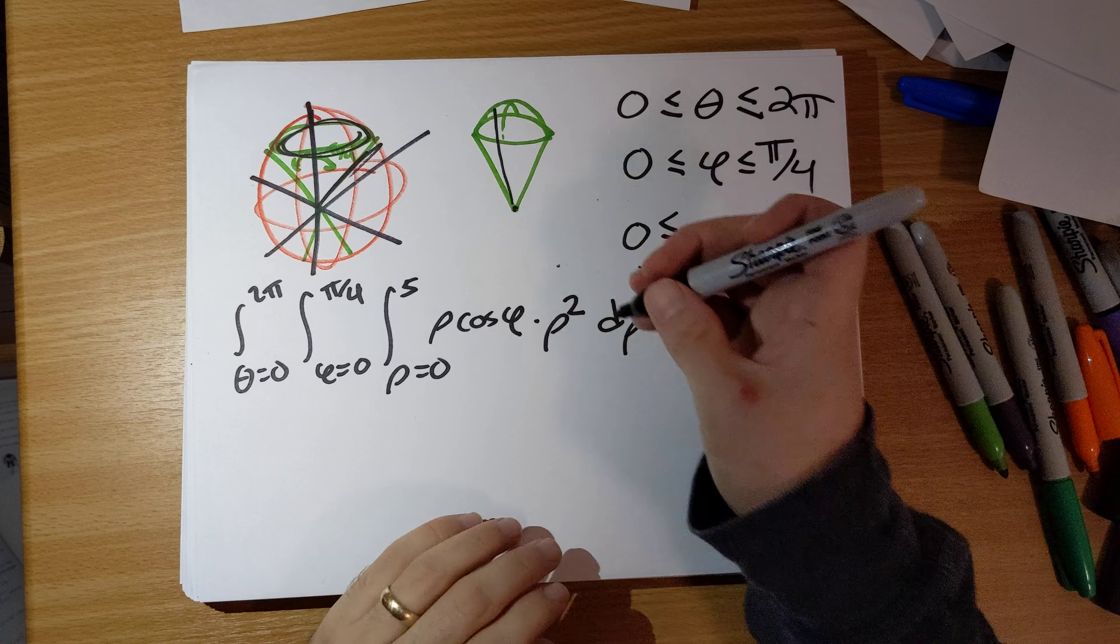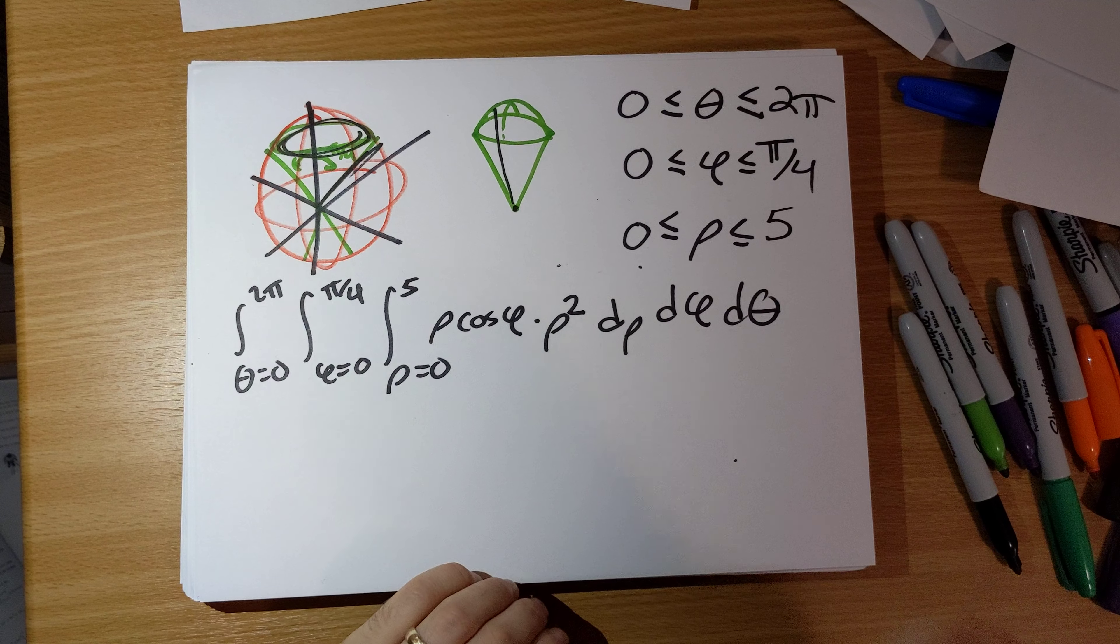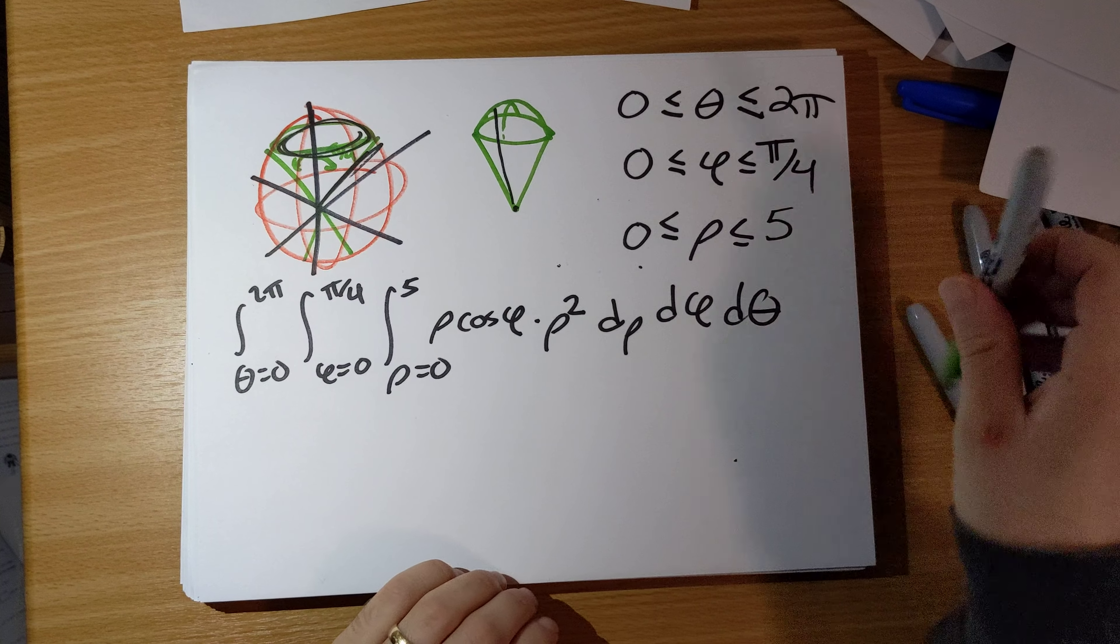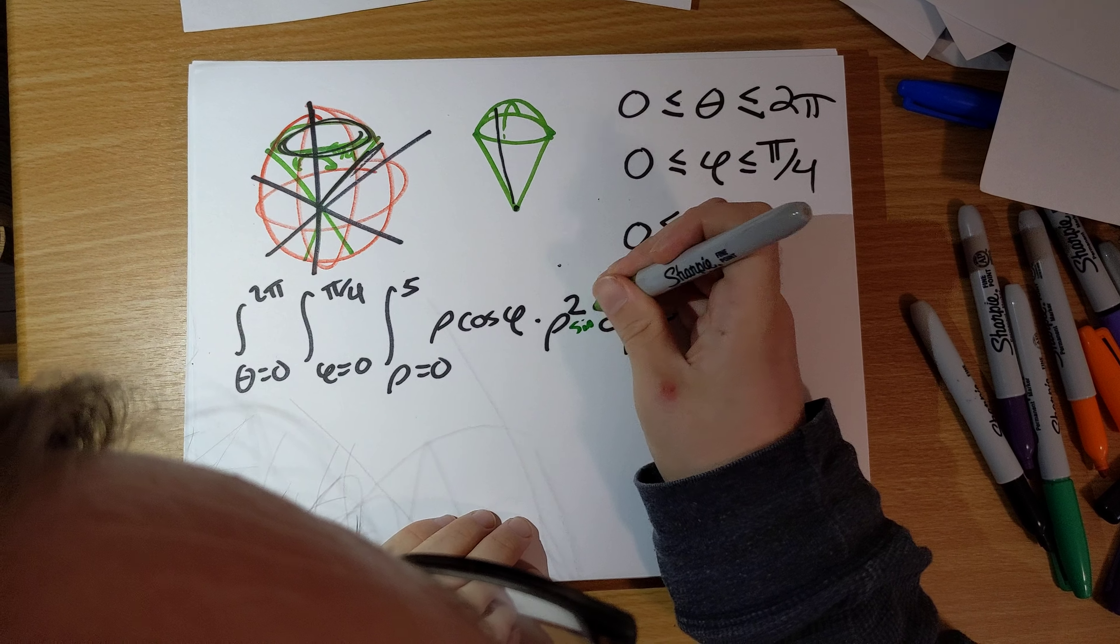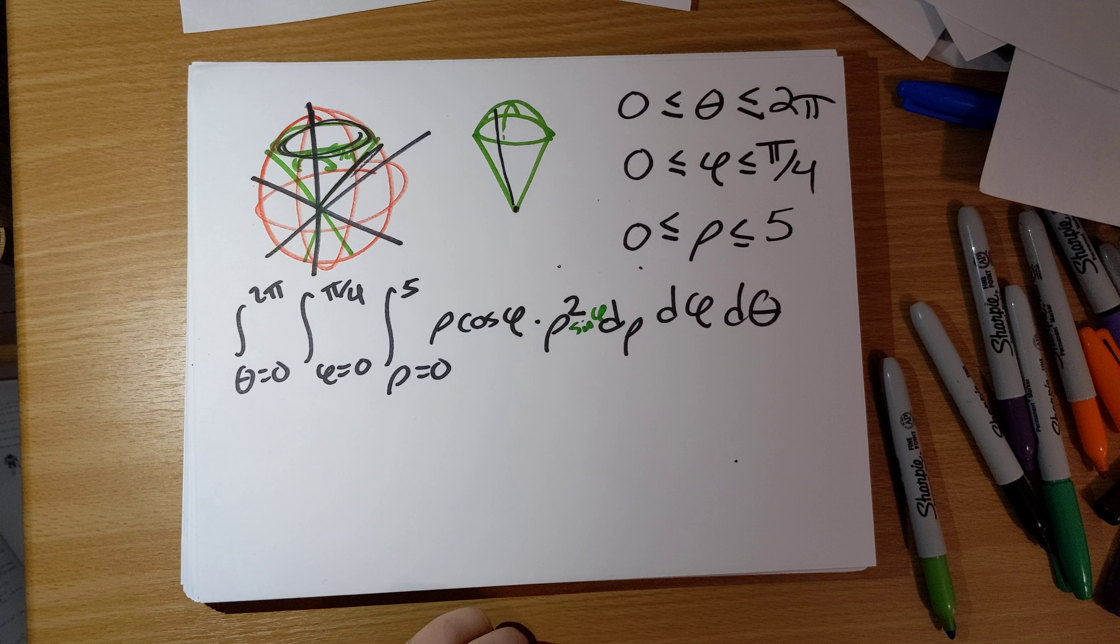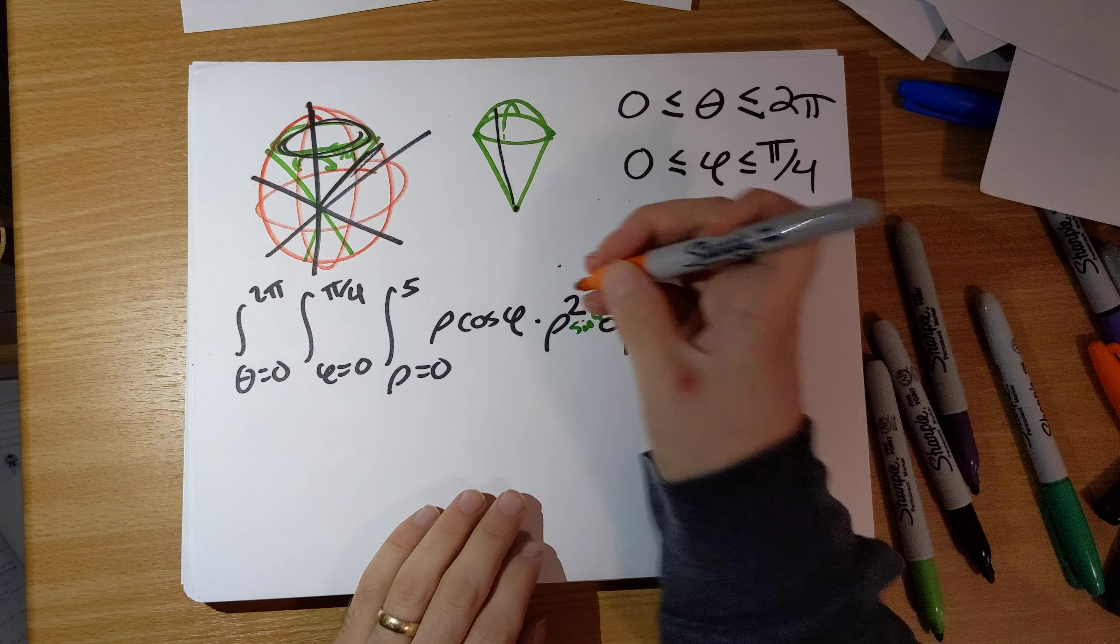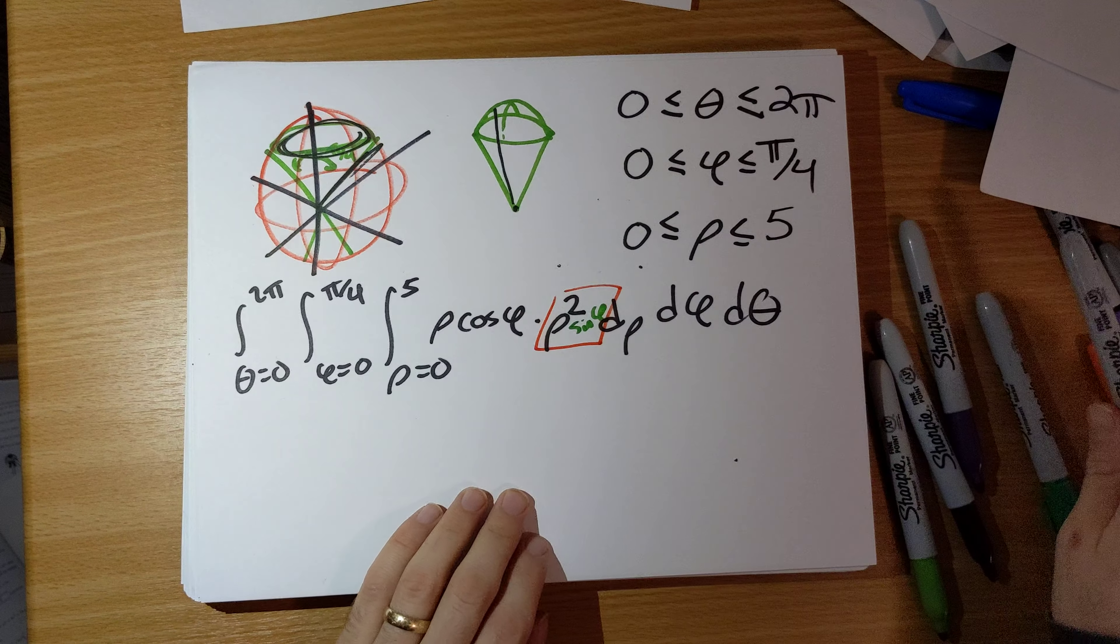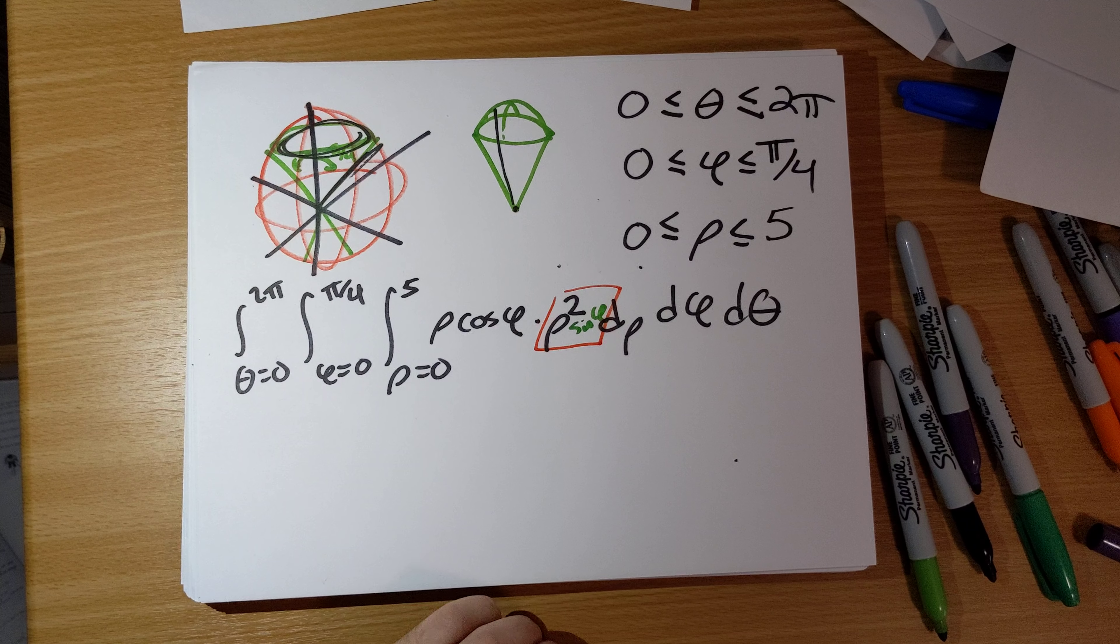Okay, so this should be, oh, I am forgetting something. What am I forgetting? Rho squared sine phi, d rho, d phi, d theta. Because this entire thing, rho squared sine phi, that's the extra factor that we throw in here.